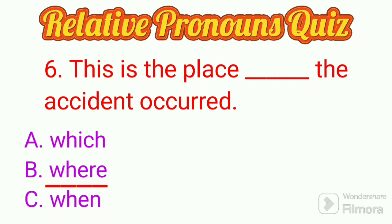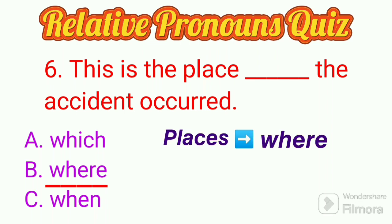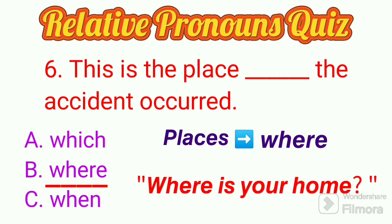This is the place ___ the accident occurred. When we ask about places, we use the relative pronoun 'where' — for example, where is your home, where do you come from? So the sentence will be: this is the place where the accident occurred.